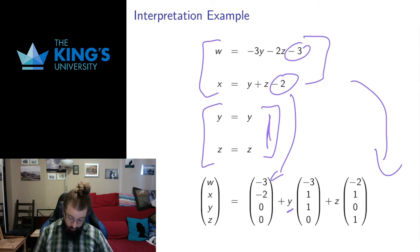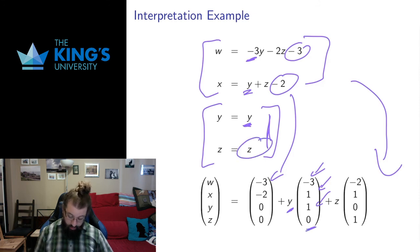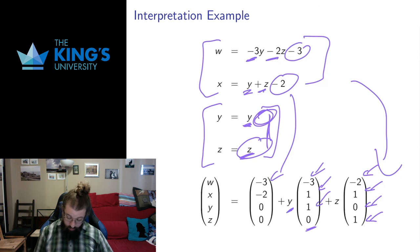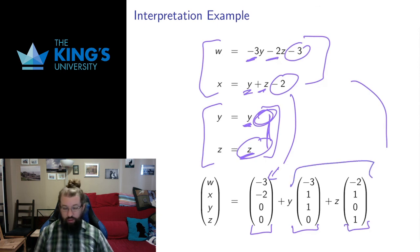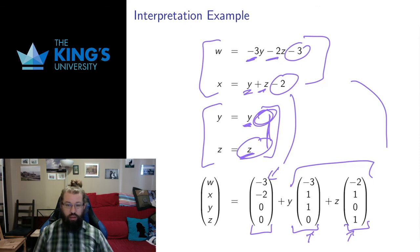Taking the coefficients of y: negative 3, 1, 1, 0. Taking the coefficients of z: negative 2, 1, 0, 1. This tells me what the affine space is: the offset plus all multiples of the y-vector plus all multiples of the z-vector. I can think of this as the offset plus the span of these two vectors. y and z are free variables — we get any multiple of one vector plus any multiple of the other, which is exactly what a span is defined to be.